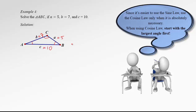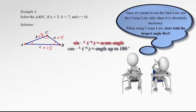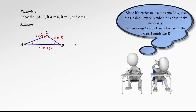This is because when we try to find an angle using the inverse sine function, the calculator will always give us the acute angle, while the inverse cosine function returns any angle from 0 to 180 degrees. So if we are after an obtuse angle, it's safer to use the cosine law. We know that the largest angle is across the longest side, so we are going to solve for angle C first.